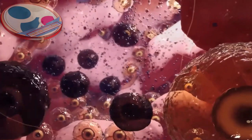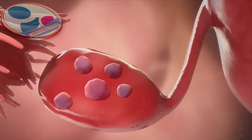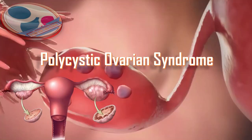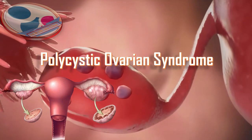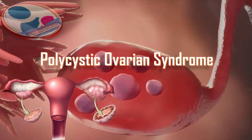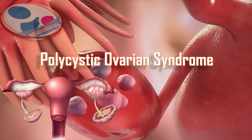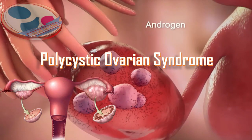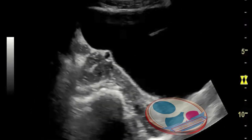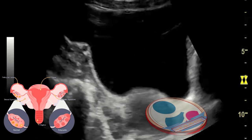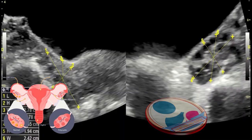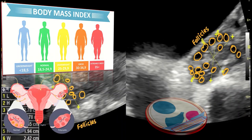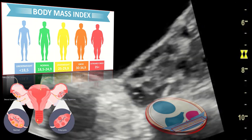The most common cause of ovulation problems is polycystic ovarian syndrome, also called PCOS. This affects about 4 to 20 percent of women globally. PCOS can be challenging to diagnose because there are so many differences among the people who have it.